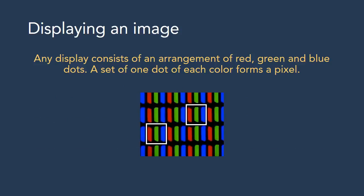But how does an image like that get displayed on a screen? To put it simply, every screen has a two-dimensional array of pixels, with each pixel consisting of three dots — one for each of the colors red, green, and blue. When an image is rendered, every pixel lights up according to the intensity specified in the image file. Thus the screen displays a matrix of colors which we perceive as an image.